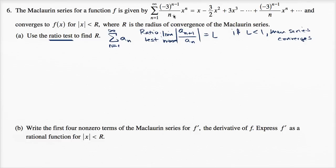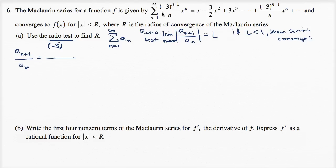What we want to do here is find the absolute value of the ratio, take the limit, and see for what x values that limit will be less than one. So a sub n plus one over a sub n equals: plugging n plus one into the expression gives negative three to the n plus one minus one — which simplifies to negative three to the n — times x to the n plus one, over n plus one. And a sub n is negative three to the n minus one times x to the n, over n.